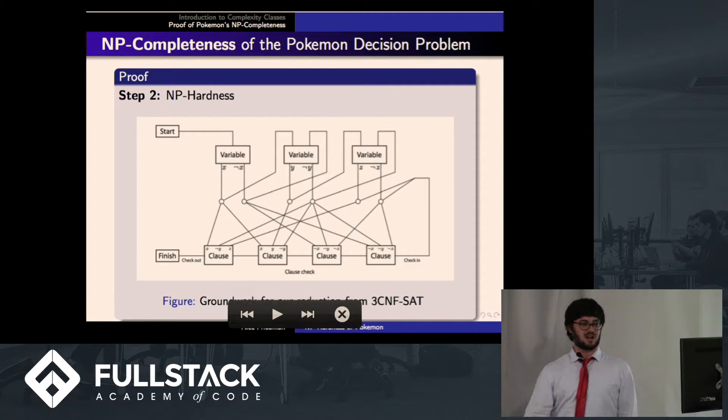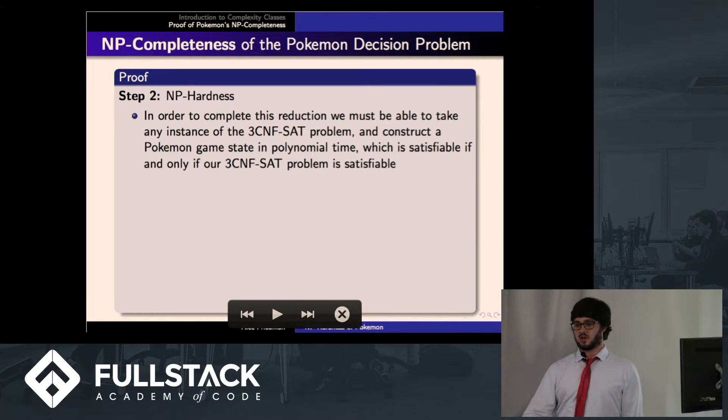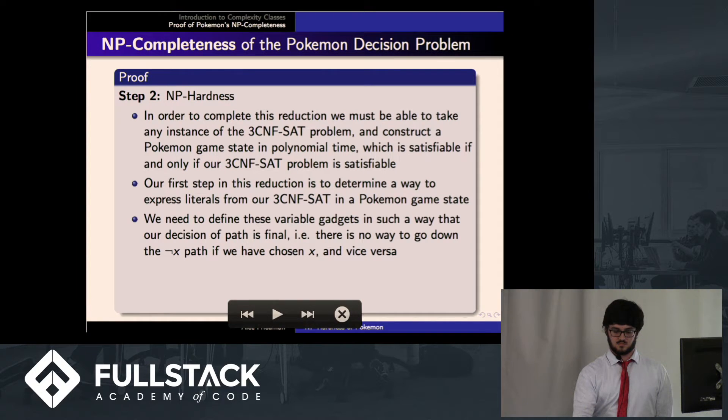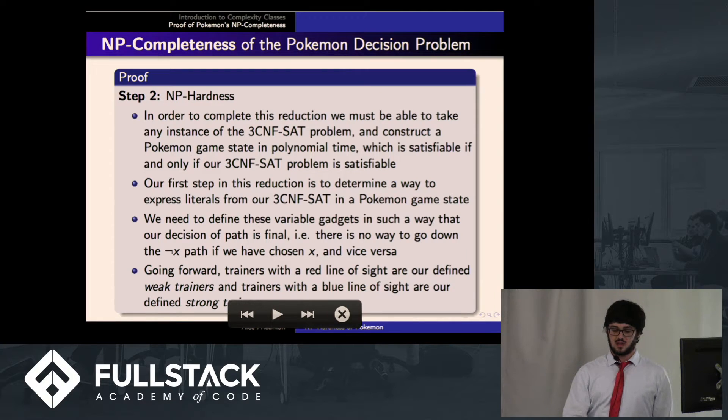So this is the groundwork for our reduction from 3CNF-SAT. Basically, this is what's going to be our roadmap. What we're going to have to do in order to solve this proof is we're going to have to build variable gadgets, build clause gadgets, and talk about ways of connecting them. So that's represented on the screen by those different boxes. And we have to be able to construct this state in polynomial time. And another thing to note is that we have to be sure that when you go down a path, that path is final. So if you choose to assign X to true, there's no way to later go down the not X path. We have to be sure to account for that. And just so you guys are aware, in the next few slides, trainers with a red line of sight are considered weak trainers, and blue line of sight are the strong trainers.